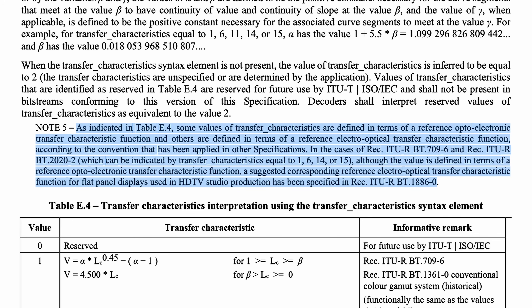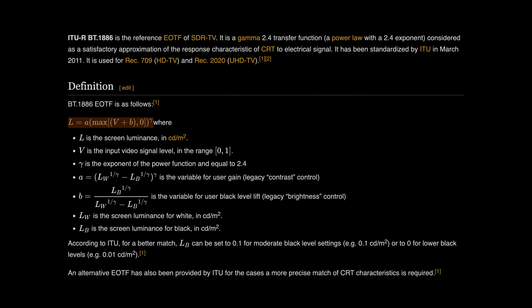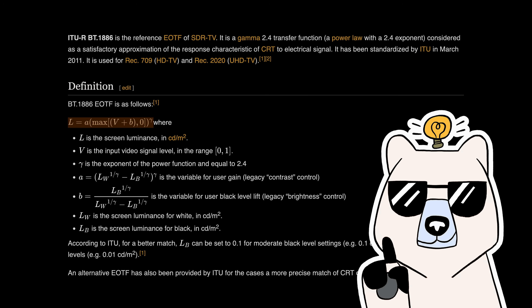And that's what the second number is for — TRC, for transfer characteristics, which is really transfer functions, tone response curves, or gamma curves. Note 5 in the spec says some values of TRC are defined in terms of a reference OETF, and others in terms of a reference EOTF, because they've been standardized in different ways. In the cases of Rec.709 and Rec.2020, even though the value is defined in terms of a reference OETF, a suggested corresponding reference EOTF for flat panel displays used in HDTV studio production has been specified in Rec.ITU-R BT.1886-0. Here's the EOTF in question. Capital V is the input video signal level in the range 0 to 1. Capital L is screen luminance in candelas per square meter — also called nits. Gamma is 2.4.